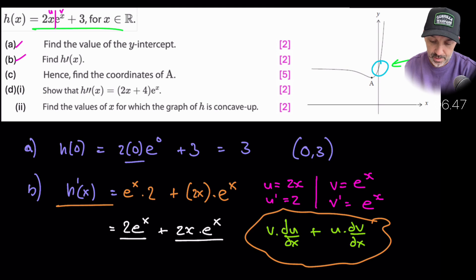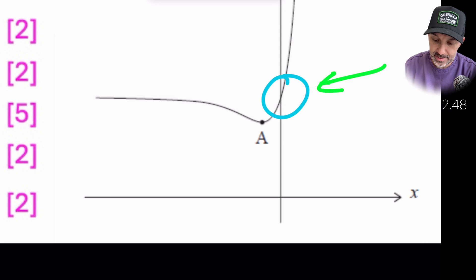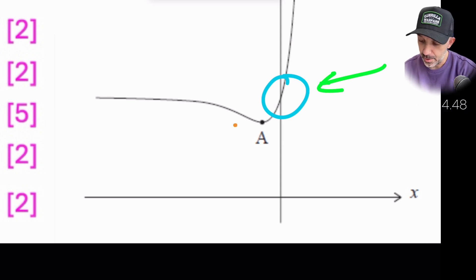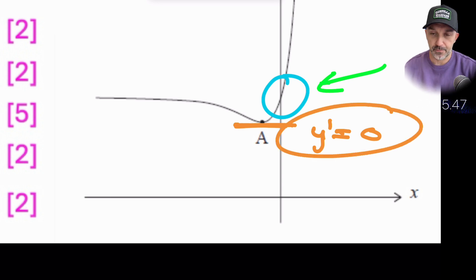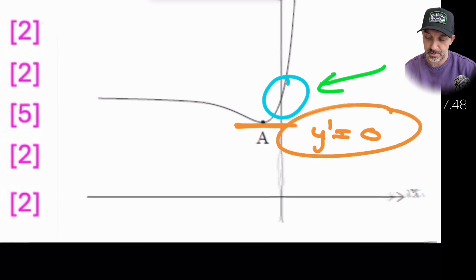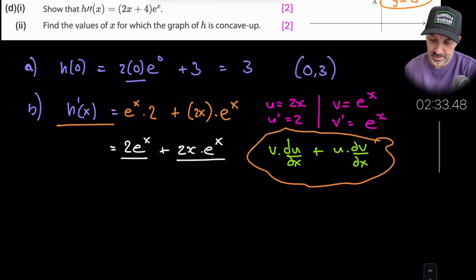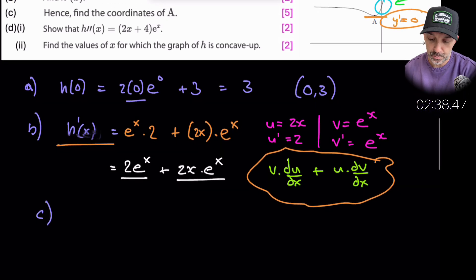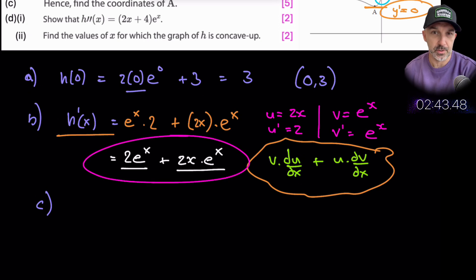So we've done parts A and B. Part C says: hence find the coordinates of point A. Looking at the diagram, A is a turning point. A turning point is where the gradient h'(x) = 0. So we want the derivative equal to 0 — if you draw a tangent at A it will be horizontal. We equate the gradient function to 0.